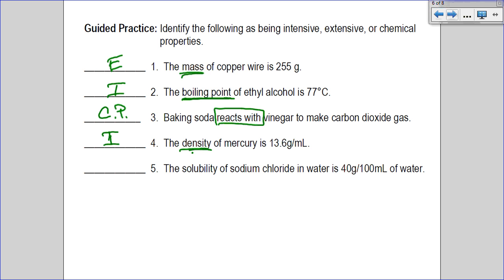Number five: the solubility of sodium chloride in water is 40 grams per 100 ml of water. Well, solubility is, again, one of those intensive properties on our list.